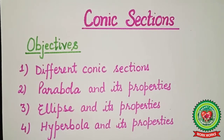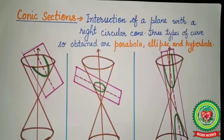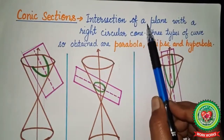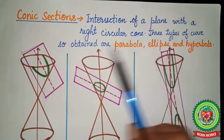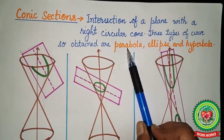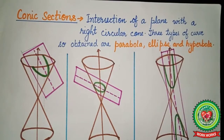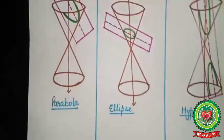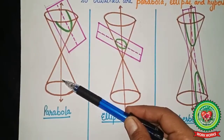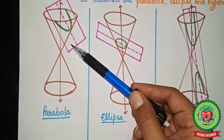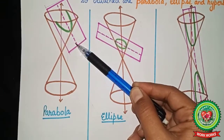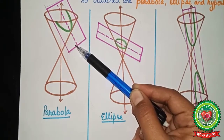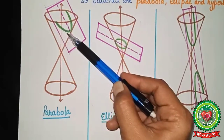Conic section means the intersection of a plane with a right circular cone. There are three types of curves so obtained: first is a parabola, second is ellipse, and third is a hyperbola. From the diagram you can see we have a double cone. This is a plane where we do the intersection — depending upon the direction of the plane, we get a different type of curve.